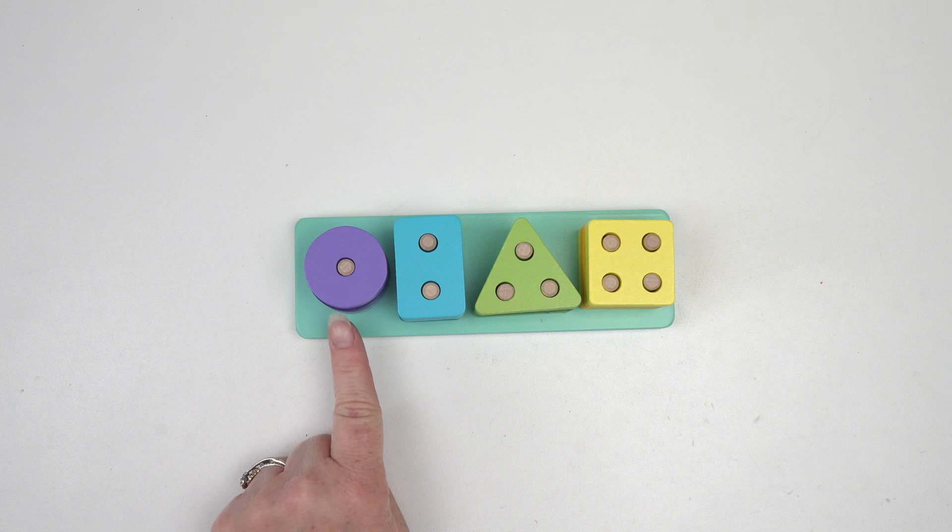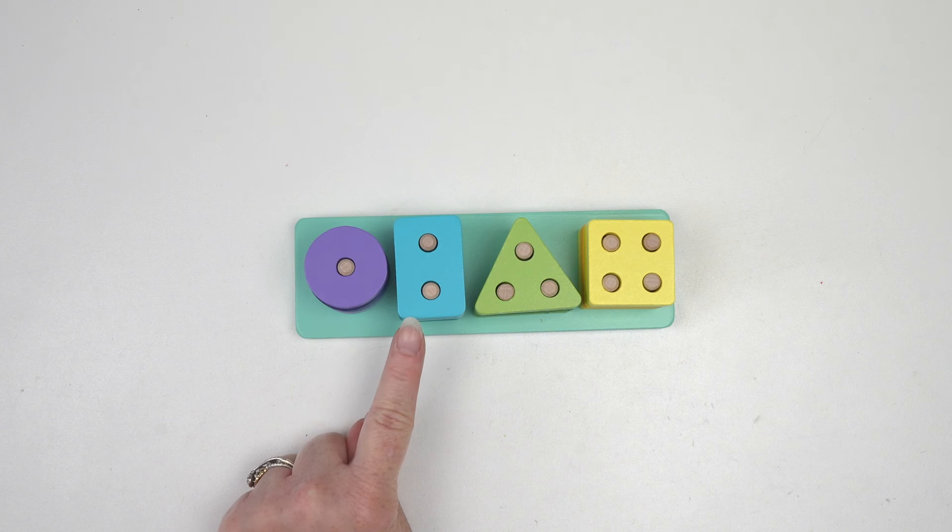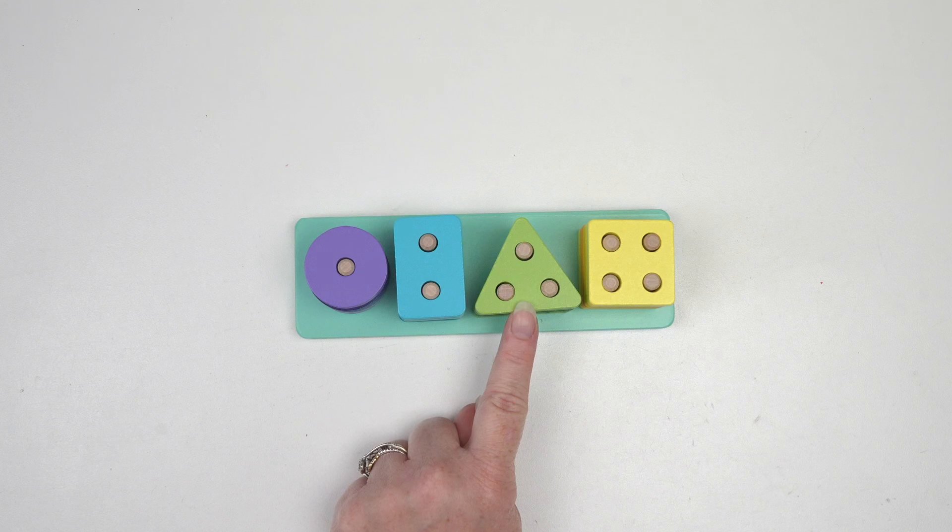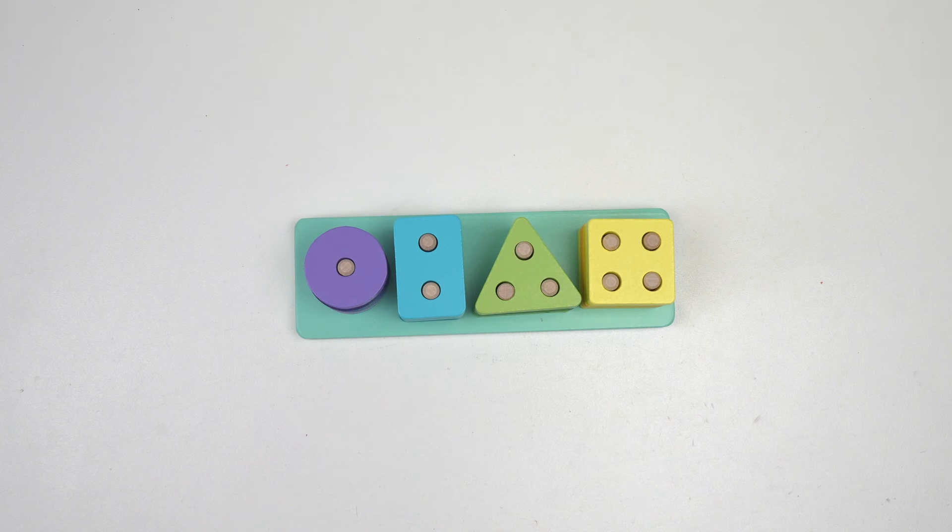So we had a circle with one hole, a rectangle with two holes, a triangle with three holes, and a square with four holes.